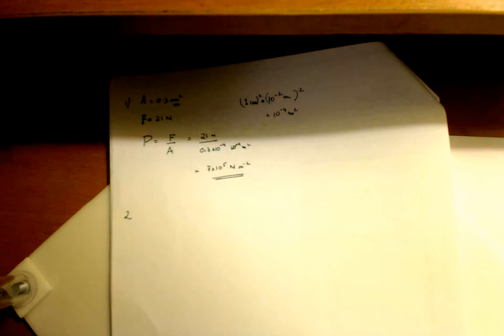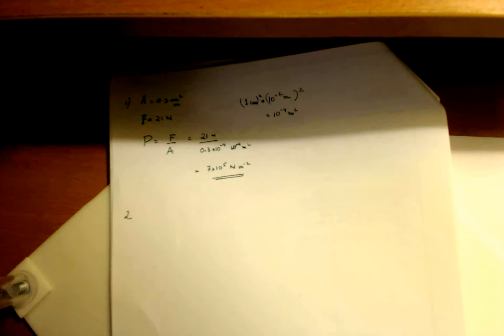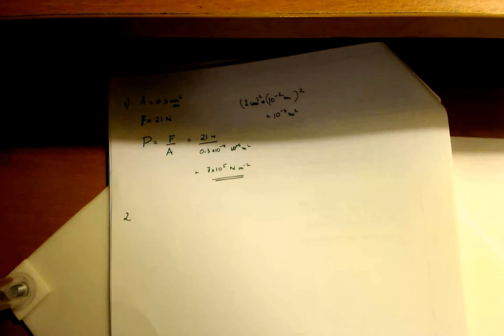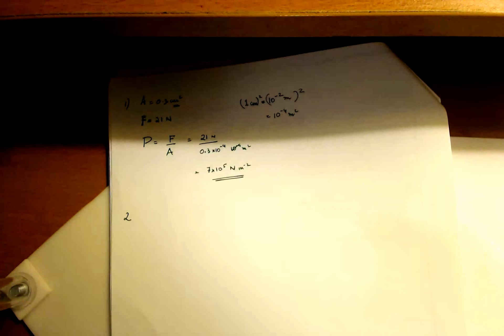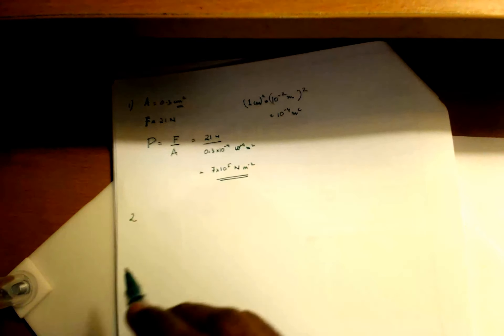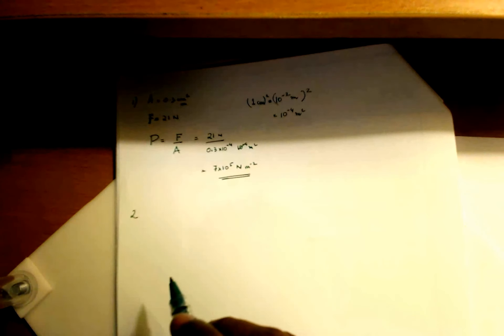Okay, so coming to question two now. Find the pressure in atmospheres at the base of a dam if the water in the reservoir is 170 meters deep. So find the pressure in atmospheres at the base of a dam where the water is 170 meters deep.